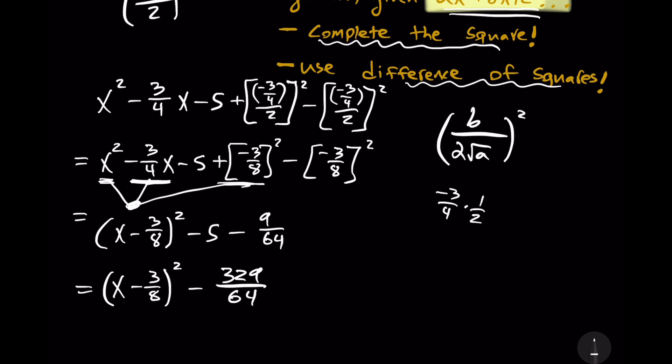So, recall that if we have the quantity a minus b times the quantity a plus b, that's equal to a squared minus b squared. And now, that's hidden right now, to be sure, but it appears there, because we can rewrite this as x minus 3 over 8, that quantity squared, minus the square root of 329 over 64 squared. They're equivalent expressions, but now it's more explicit in that format.